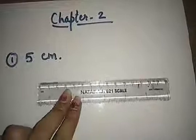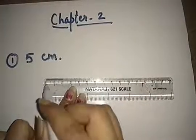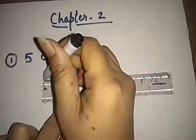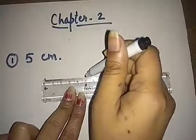5 cm. So see here, 0 is given. So this 0 to 5. First of all, we will put one dot here and one here.